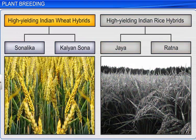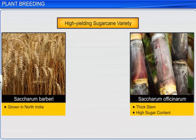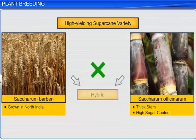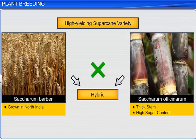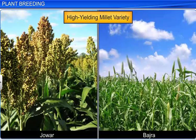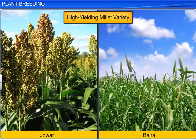Later, better yielding varieties of wheat hybrids such as Sonalika and Kalyan Sona, and rice hybrids such as Jaya and Ratana, were developed in India. In the case of sugarcane, Saccharum Barberi and Saccharum Officinarum were crossbred to get a hybrid with a very thick stem, higher sugar content, and the ability to grow in northern parts of India. Similarly, high yielding hybrids of millet such as Jowar and Bajra, which are resistant to water scarcity, were also developed in India.